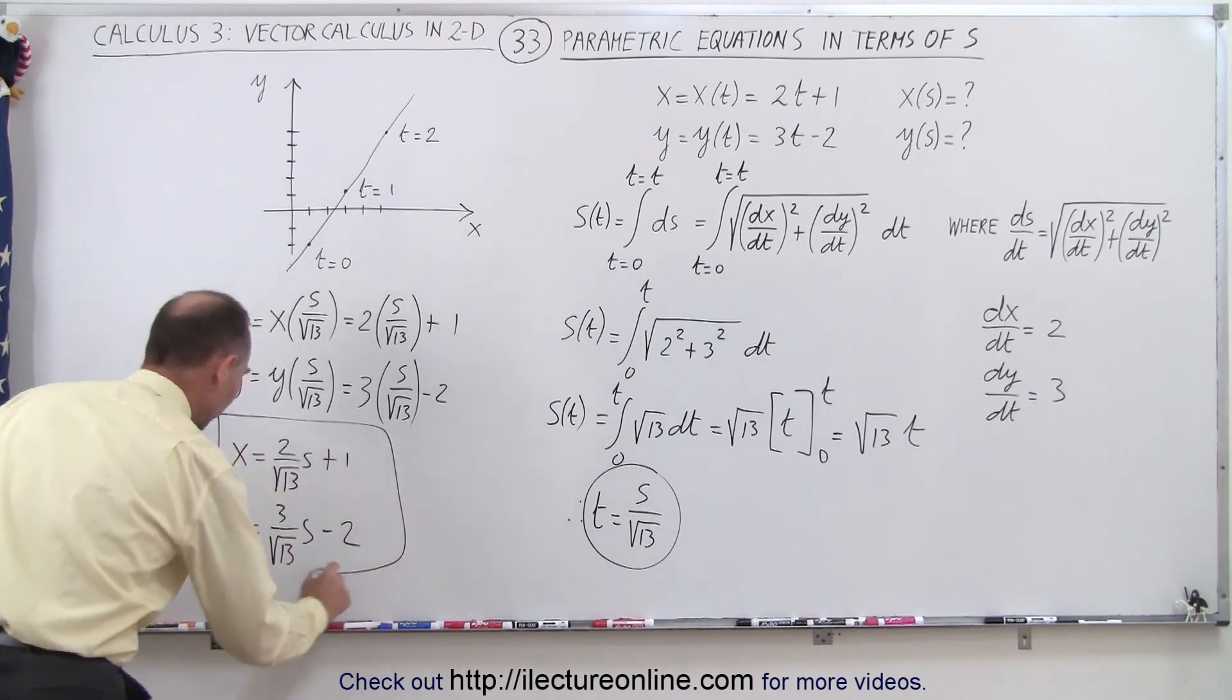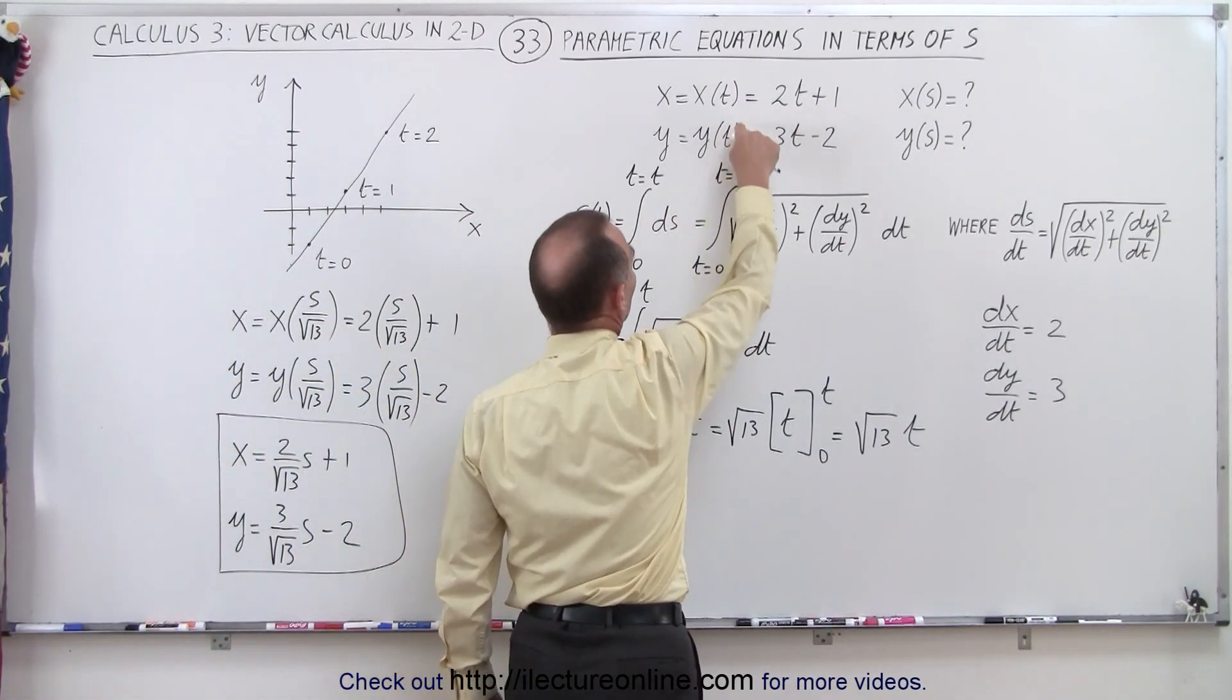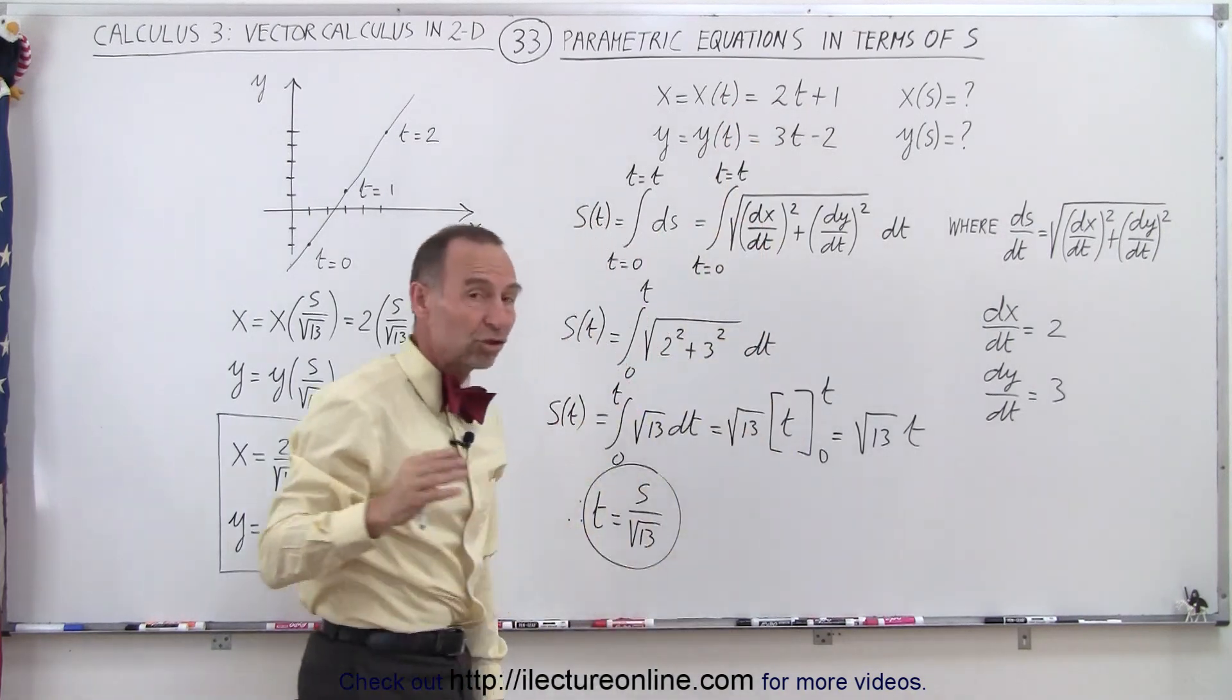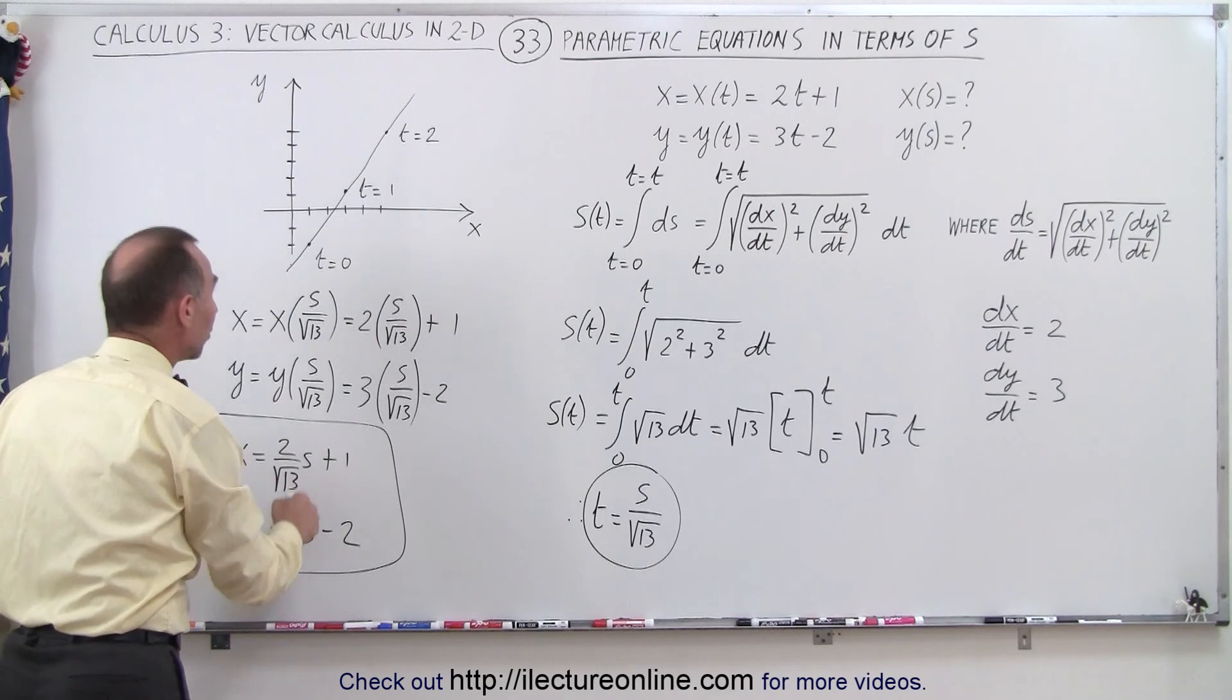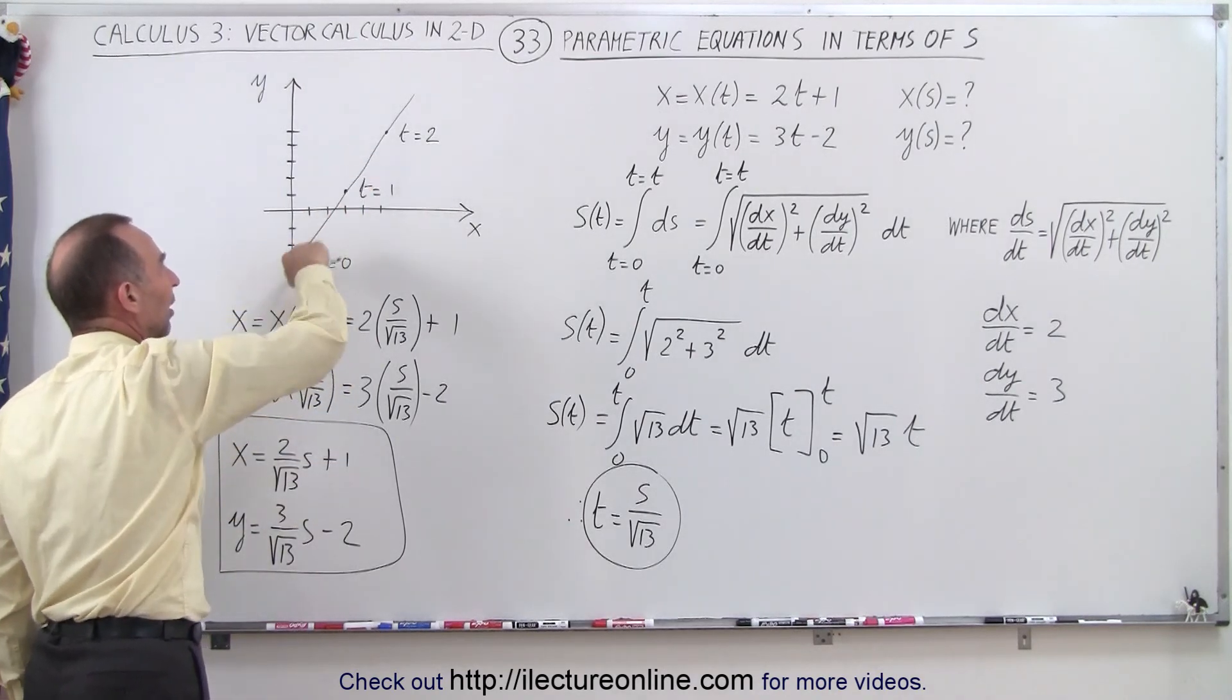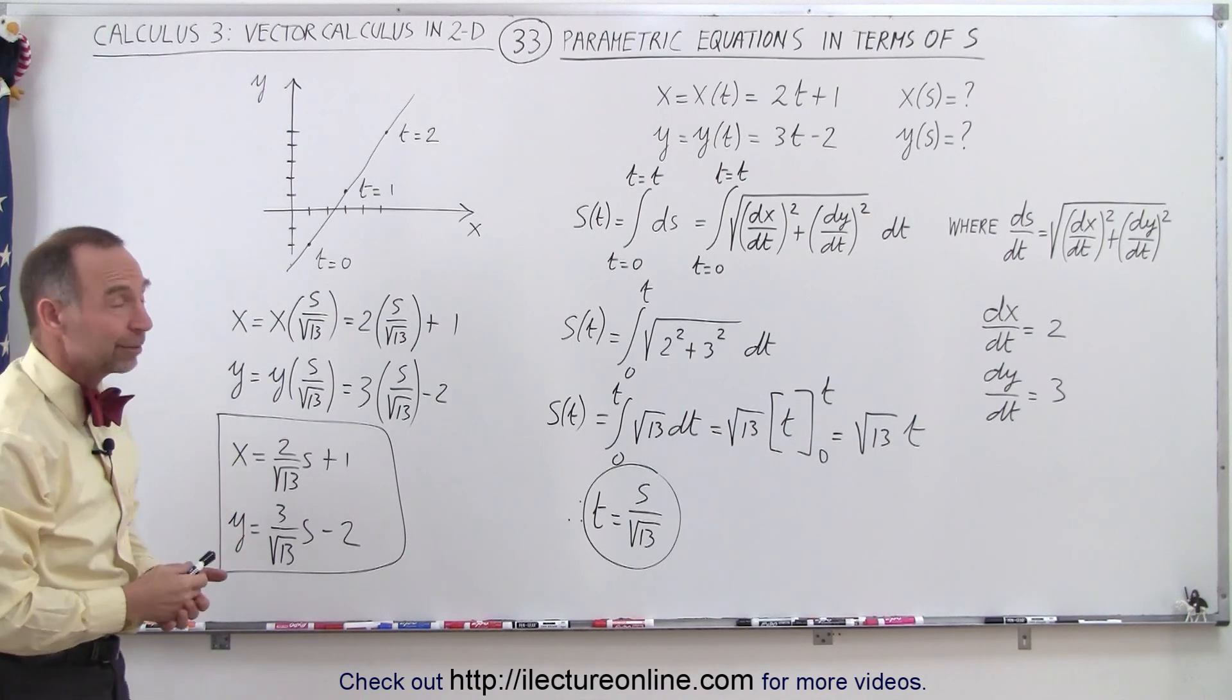So now what we've done is we've transformed our two parametric equations, which are expressed as a function of the parametric variable t, and changed them to two equations which are now a function of s, which is the variable that represents the distance traveled along the curve. So that's how we transform one to the other.